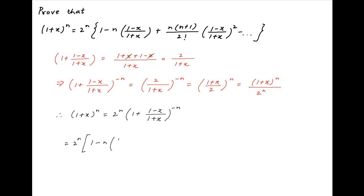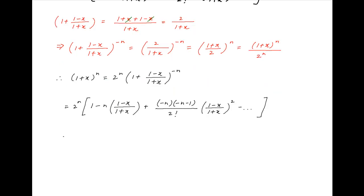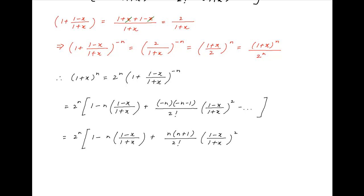we get 2^n times, in brackets: 1 minus n times (1 minus x)/(1 plus x) plus [minus n times (minus n minus 1)] upon 2 factorial times [(1 minus x)/(1 plus x)]^2 plus and so on. This simplifies to 2^n times: 1 minus n times (1 minus x)/(1 plus x) plus n(n plus 1) upon 2 factorial times [(1 minus x)/(1 plus x)]^2 plus and so on, which is the desired result.